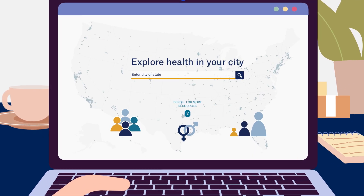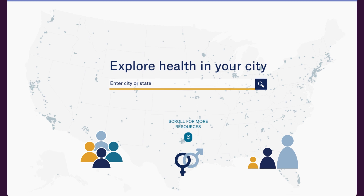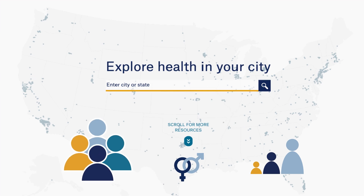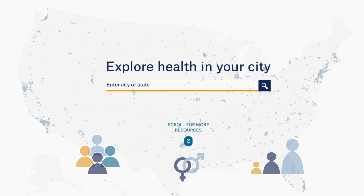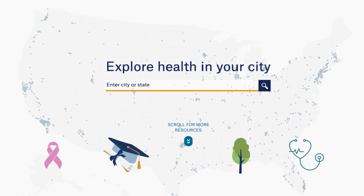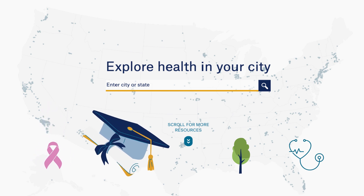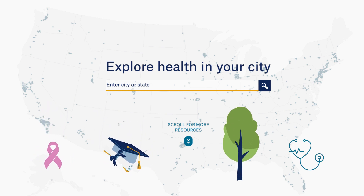The Dashboard provides data disaggregated by race, ethnicity, sex, or age for a number of our metrics, including breast cancer deaths, high school completion, park access, and uninsurance.